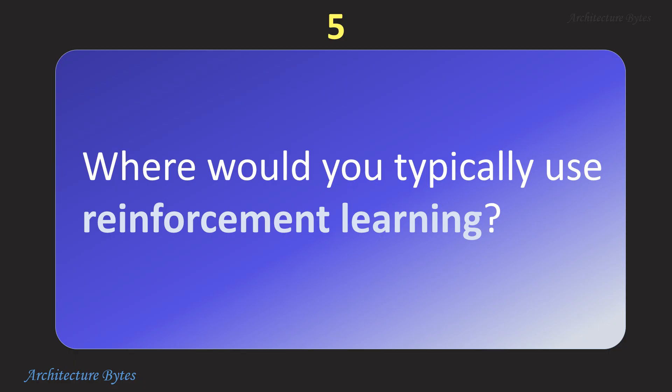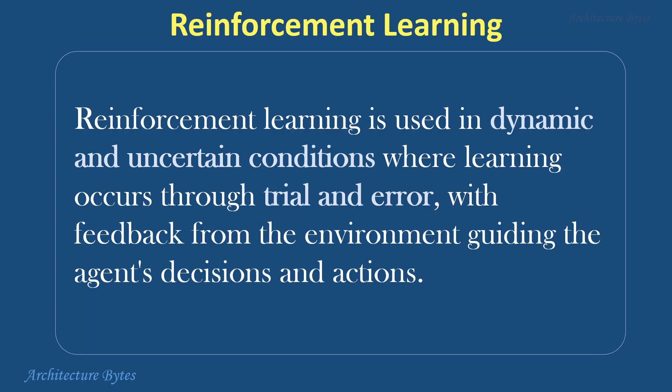Where would you typically use reinforcement learning? Reinforcement learning is used in dynamic and uncertain conditions where learning occurs through trial and error with feedback from the environment, guiding the agent's decisions and actions. You could use it for training autonomous vehicles, developing game-playing agents, optimizing robotic control, etc.